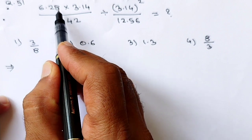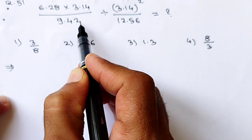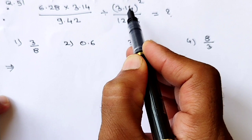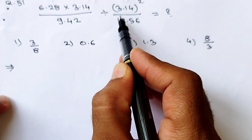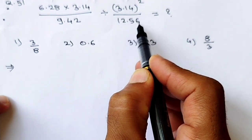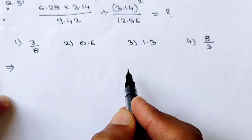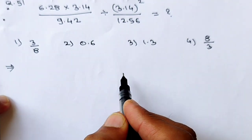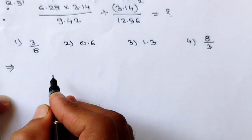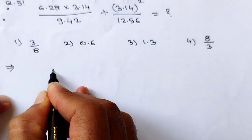See question number 51: 6.28 × 3.14 ÷ 9.42 ÷ (3.14² ÷ 12.56). In this question it is simple — just keep your presence of mind while solving these brackets. Here I will write it once again.